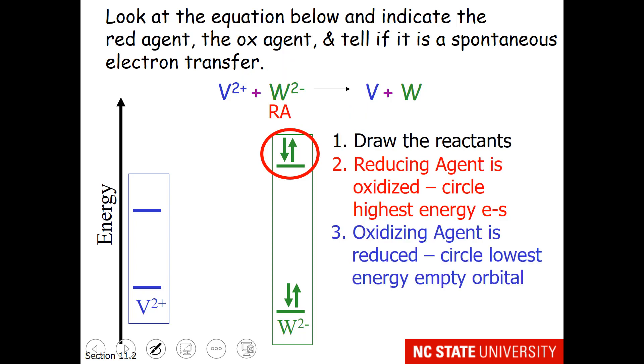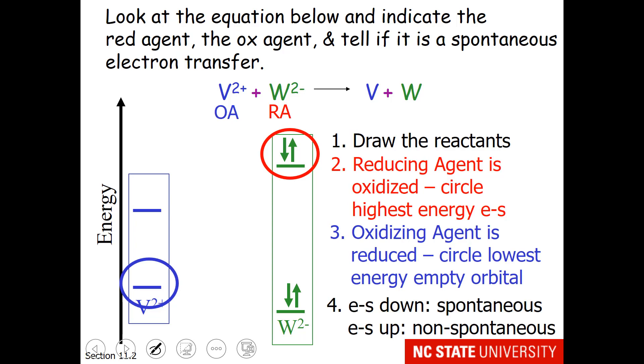My next job is to find the oxidizing agent. Remember that the oxidizing agent is reduced. So certainly V, which goes from plus two to zero, is going down in oxidation state. So on my oxidizing agent, I'm going to circle the lowest energy orbitals. So that means the lower ones on V2 plus. Basically, if it's not the reducing agent, it is the oxidizing agent. Both of these exist on the reactant side. Now I just have to think about electrons moving. When the electrons move from W2 minus to V2 plus, do they fall downward or go upward? Well, I hope you feel like they fall downward, which makes this a spontaneous reaction.